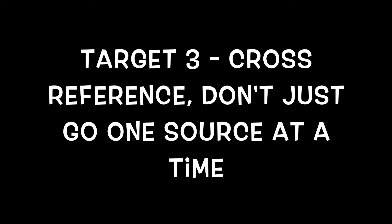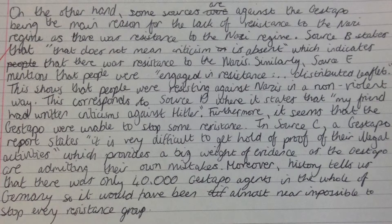Target 3: there are still some people who are taking the sources one at a time, but one of the main skills being assessed is that you can see the bigger picture — that you can see all the sources together. Here is a brilliant example of cross-referencing: you can see phrases like 'this corresponds' and 'similarly,' showing how this person sees the bigger picture. There must be a lot more cross-referencing in future answers. One way to check if this applies to you is to look for comparing words from the Part A answer — if you haven't got them, this could be a target for you.